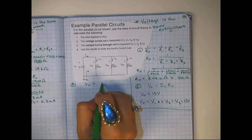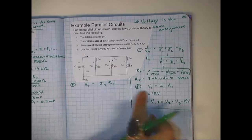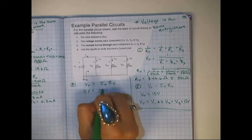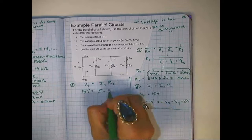V total equals I total R total. Do I know V total? Yes, it's 15. I don't know the current, but I do know the resistance total because we found it right here. So we're going to plug it in.